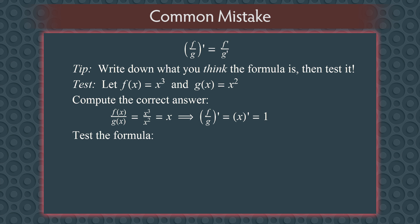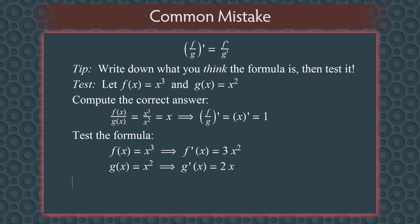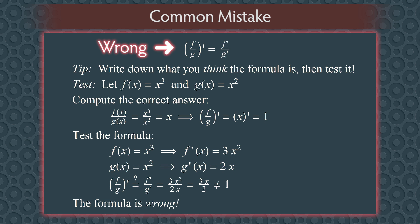Now let's test the wrong formula. If f of x equals x cubed, then f prime equals 3x squared. And g of x equals x squared, so g prime equals 2x. Using f prime over g prime gives us 3x squared over 2x, which simplifies to 3x over 2 — which is not 1. So we know that formula is wrong. Whenever you're working from memory, it's very helpful to quickly jot down what you think the formulas are and do a quick test to see if they're right.